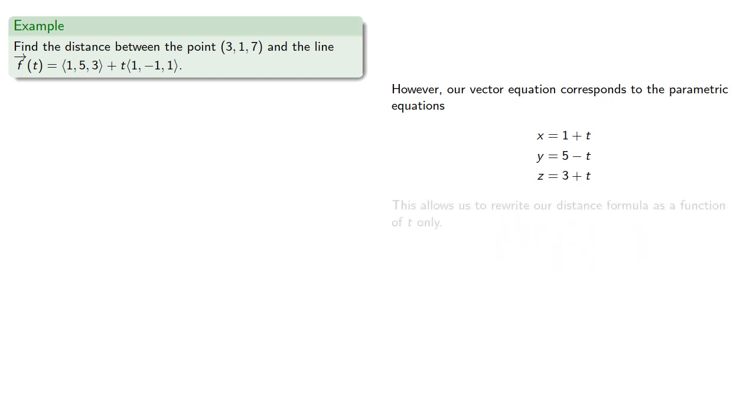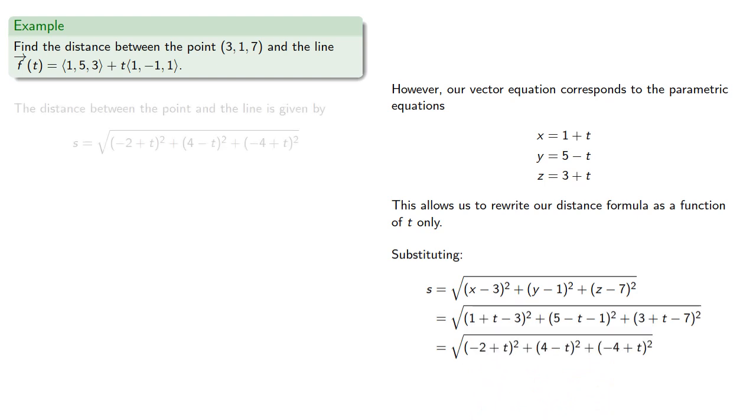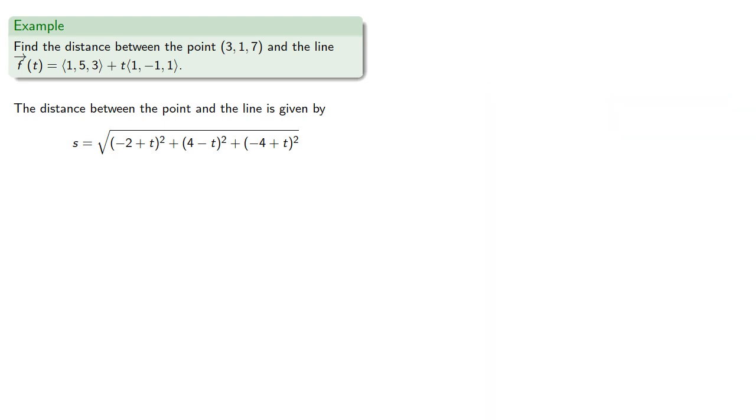And this allows us to rewrite our distance formula as a function of t only. So our distance was, substituting and simplifying... And so we get the distance between the point and the line. Now this is an optimization problem, so we'll differentiate. And while we could find the derivative directly, we'll square it to eliminate the square root and use implicit differentiation.